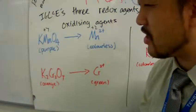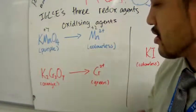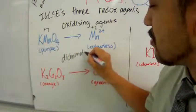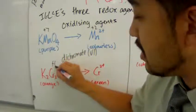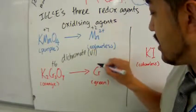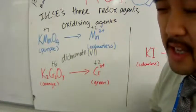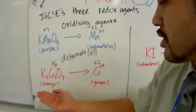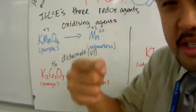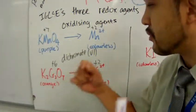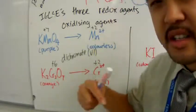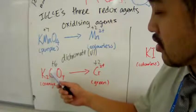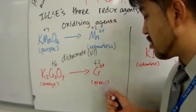Another oxidizing agent is potassium dichromate 6. The 6 in the name tells us that the oxidation number of chromium is plus 6, and it changes to a plus 2 oxidation number. So the oxidation number has reduced, meaning potassium dichromate 6 is reduced, and therefore it is a strong oxidizing agent. The color of the reaction changes from orange to green — chromium plus 6 is orange and chromium plus 2 is green.